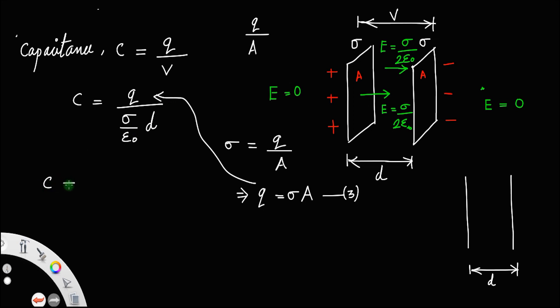C will be sigma A divided by sigma by epsilon 0 times d. You can cancel this sigma and C is equal to, you can take this epsilon 0 to the numerator so that C equal to epsilon 0 A divided by d. This is the equation for the capacitance of a parallel plate capacitor.